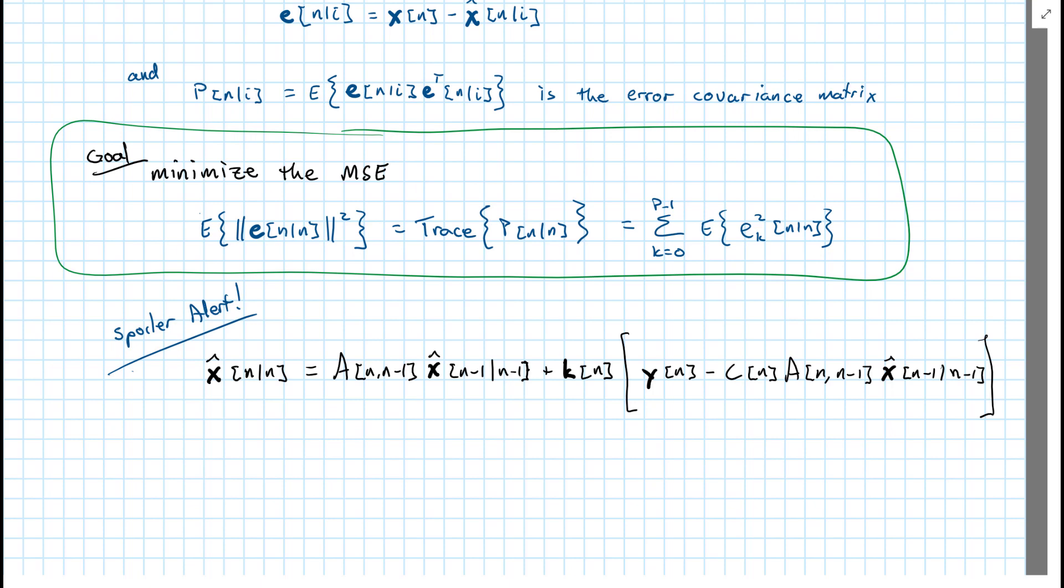This K is called the Kalman gain. And everything else here we kind of know. We have some recursive equation on x and we don't have an initial estimate of x yet. And we also don't have the Kalman gain. So the Kalman gain is going to be a very important part in what's going to come out of our derivation.